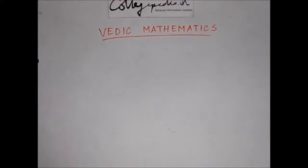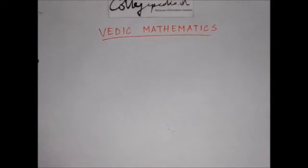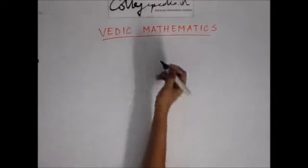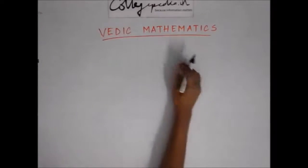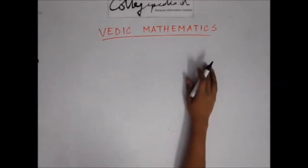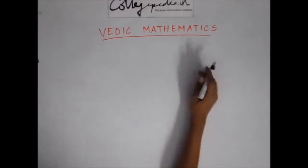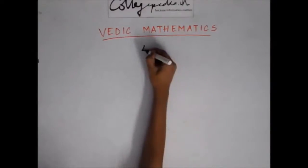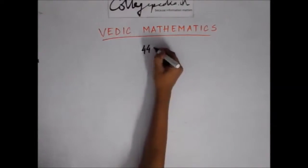Hello everyone. In the last lecture we saw how to multiply two numbers whose last digits add up to 10 and the first digit is common. In this lecture we'll just reverse it — we'll see how to multiply two numbers whose first digits add up to 10 and the last digit is common.